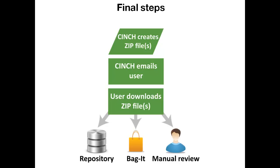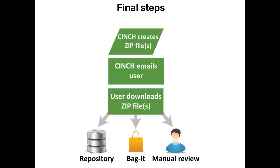When these actions are complete, Cinch packages your files into one or more zip files. Each zip file can have up to 0.5 gigabytes of content — if your current request has more than that, you'll receive more than one zip file. Each zip file includes a manifest, an event list, and a metadata file. Cinch will email you letting you know that your files are ready, and you can then download them to be processed however you'd like. You have 30 days to download your files.